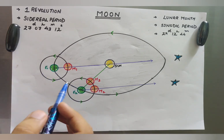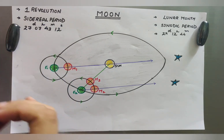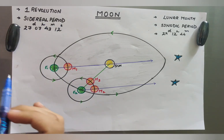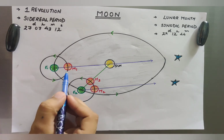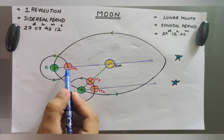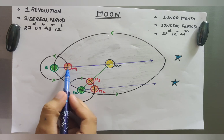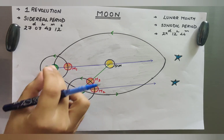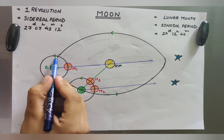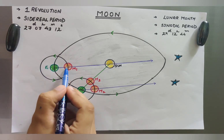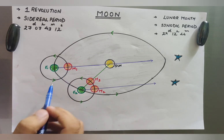So here, what happens? First of all, I'm going to talk about the sidereal period of the moon. The sidereal period of the moon is the time taken by the moon to complete one revolution around the earth. Basically when the position of the moon is M1 — if the earth was stationary and not moving — moon travels like this and comes back here to M1. This completes one sidereal period.